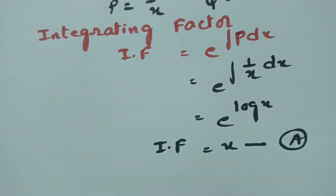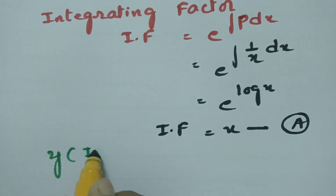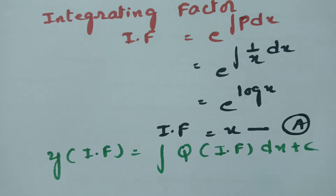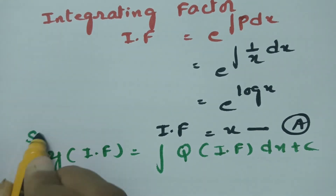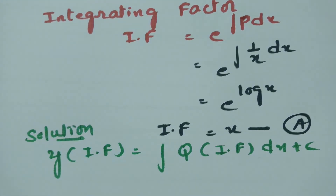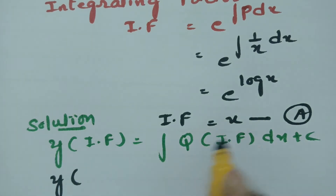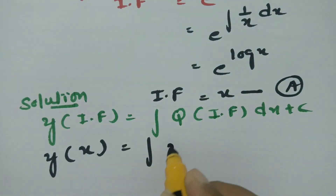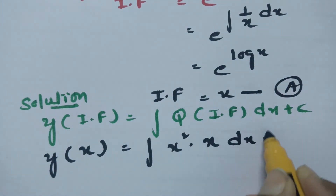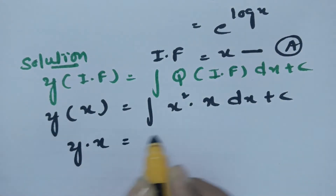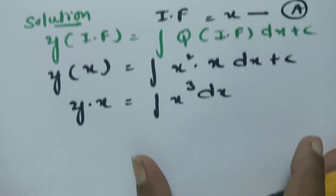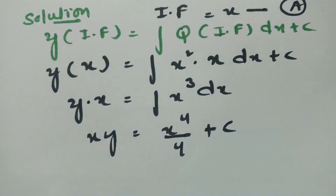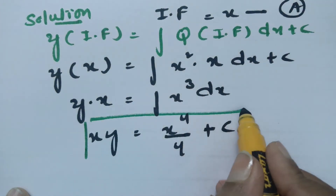We need the solution for this linear differential equation. The formula is: y into integrating factor equals integral of q into integrating factor dx plus c. So this will be y times x equals integral of x squared times x dx plus c, which is x cubed dx. After integrating, y times x equals x to the power 4 divided by 4 plus c.